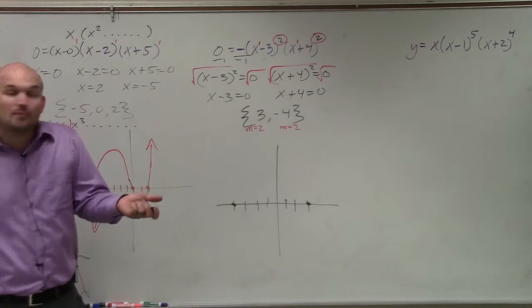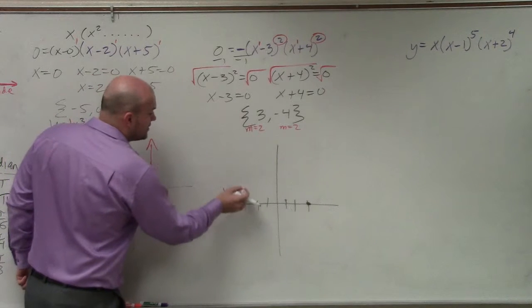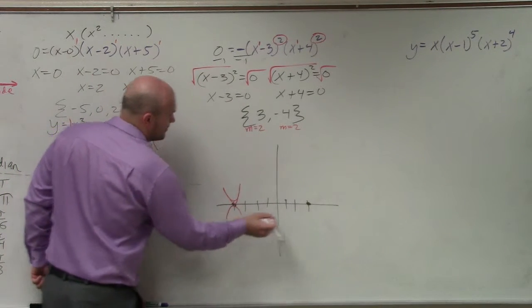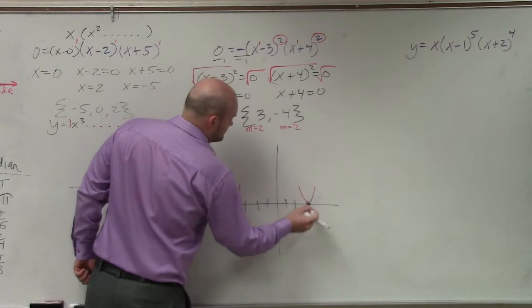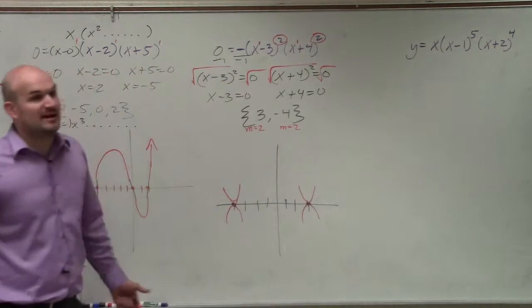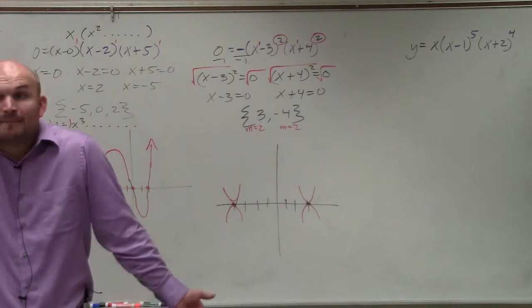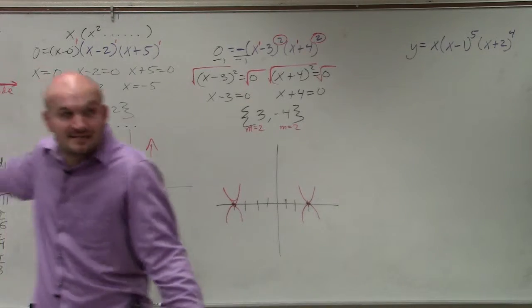Now, it can either bounce up or bounce down. We don't know. So I'm just going to represent both. I don't know if it bounces up or bounces down. I just know it bounces. I know it doesn't cross, like the last example. It bounces.